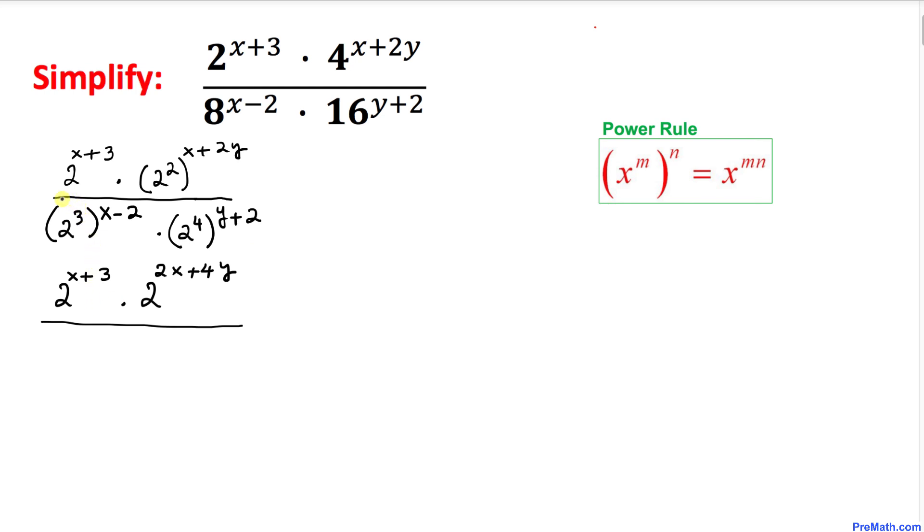Divided by—let's focus on this part. We're using the same power rule, so this becomes 2^(3x-6) times—using the power rule again—this becomes 2^(4y+8).